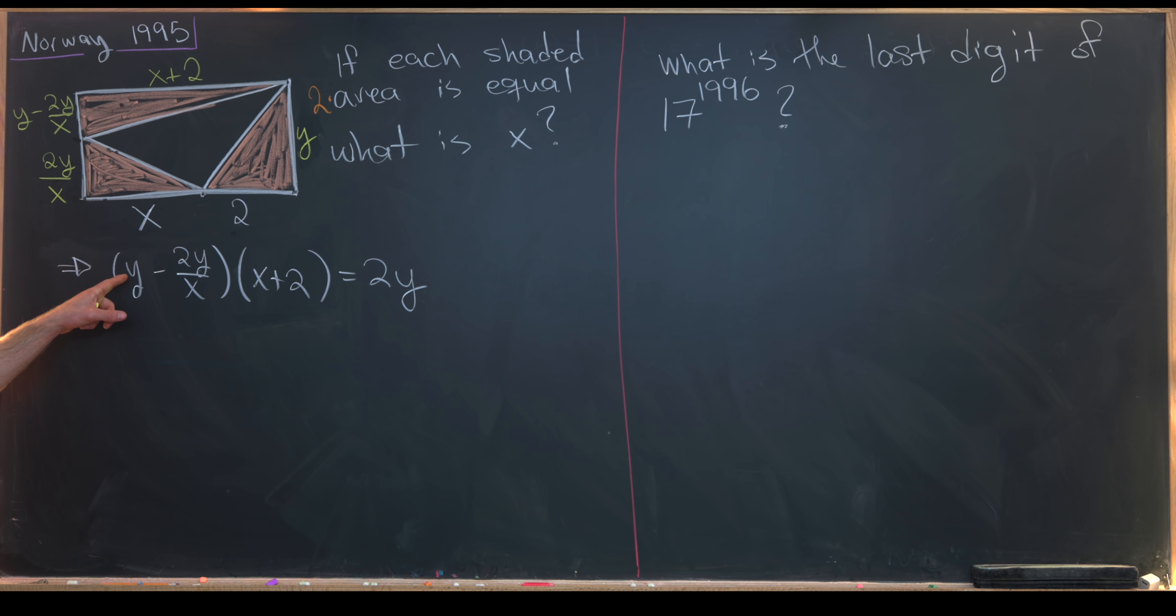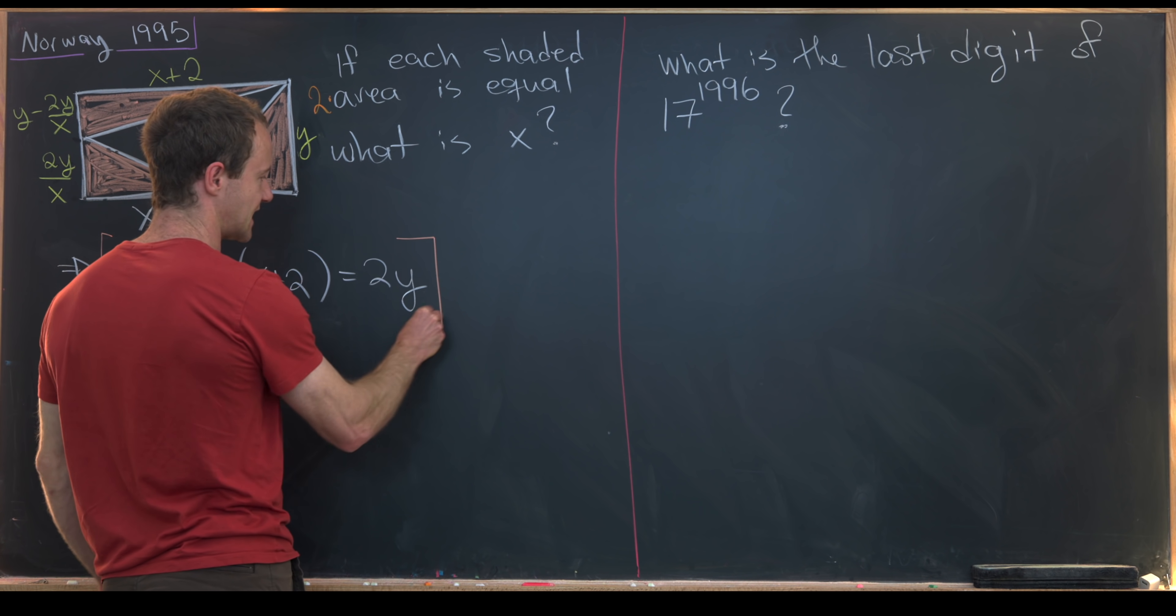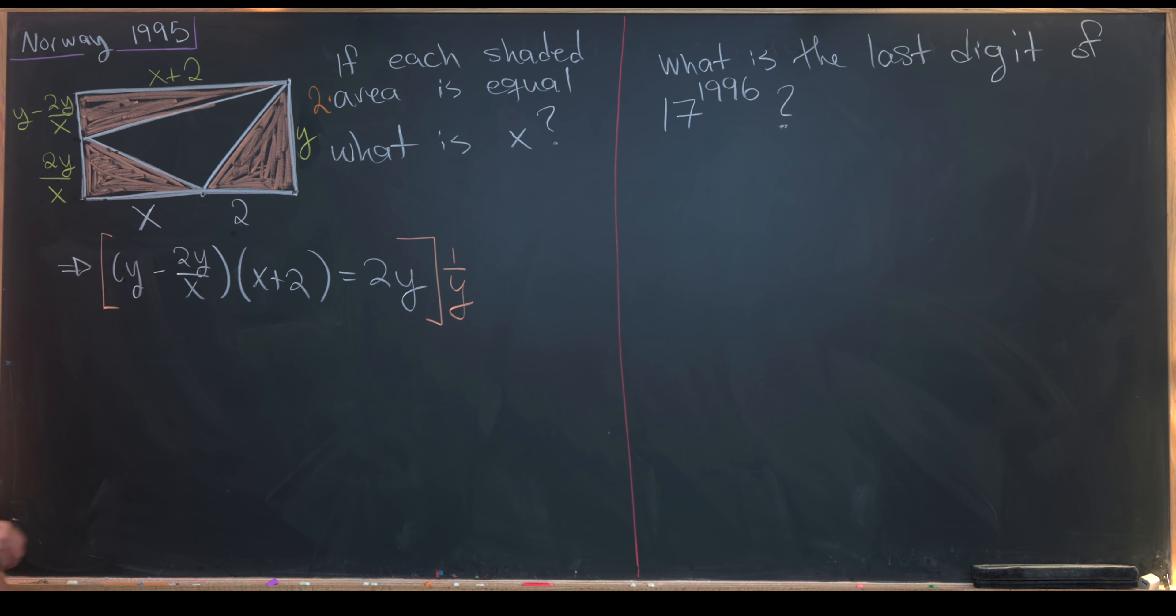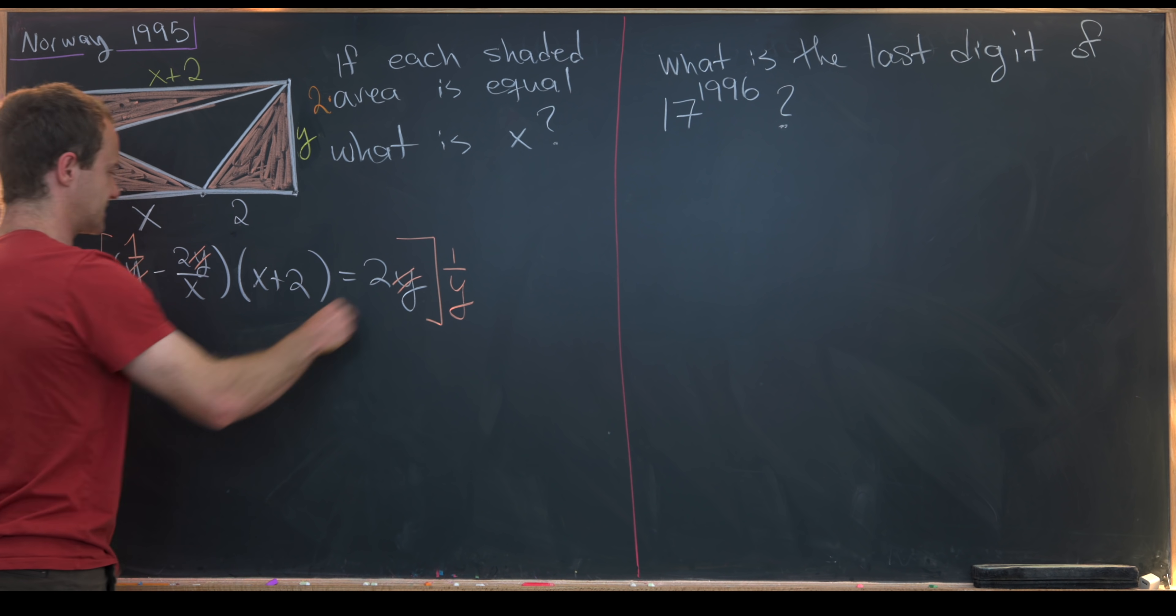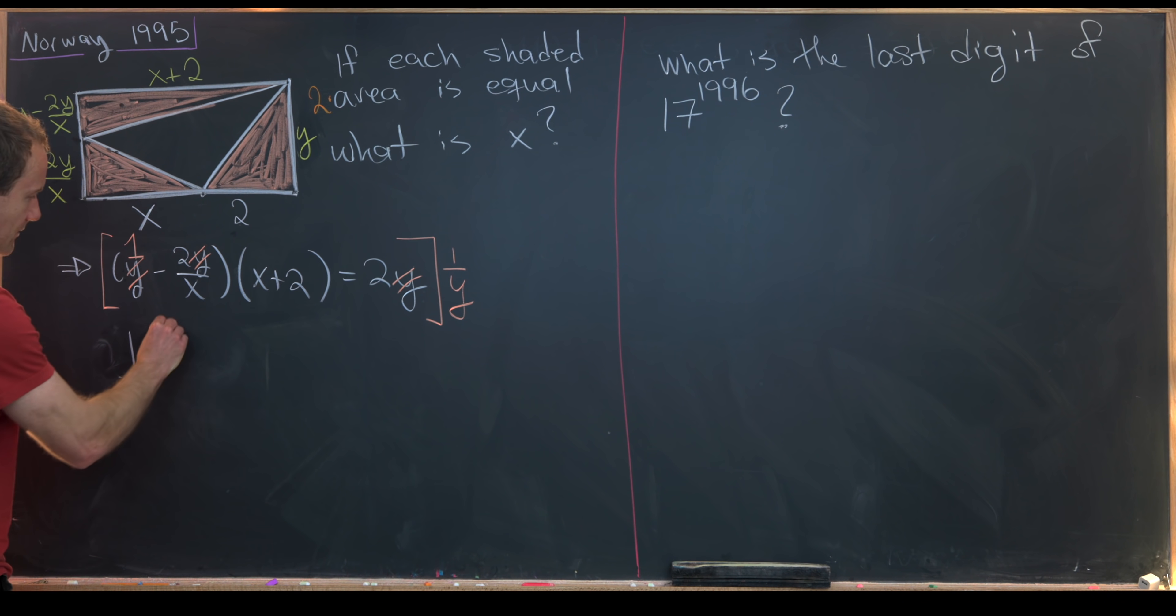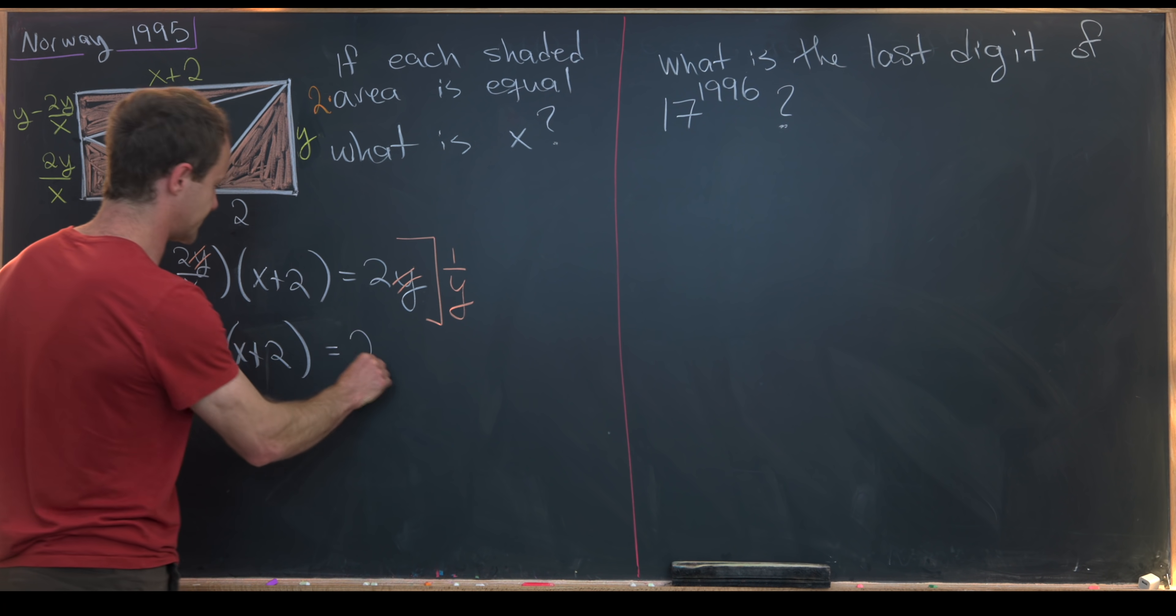Notice we've got this extra y term here, but we could divide that extra y term out and cancel it on the other side of the equation. That's allowed because y is not 0, given that we do not have a degenerate rectangle here. So just to reiterate, I'm going to take both sides of this equation and multiply by 1 over y. That's going to have the effect of canceling this down to 1, canceling this, and canceling this. That leaves us with 1 minus 2 over x times (x plus 2) equals 2.